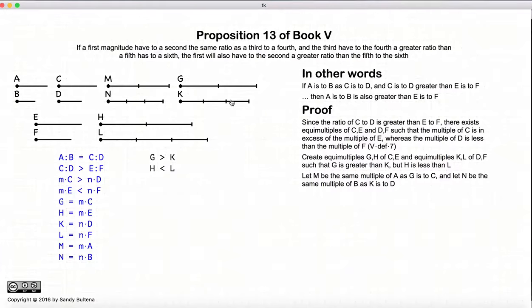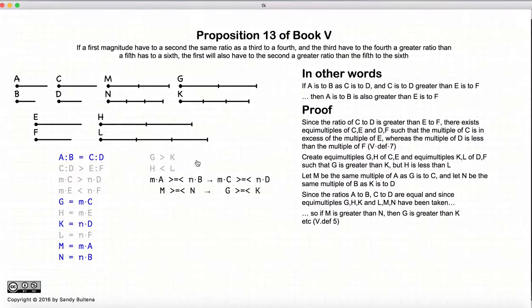Now, g is larger than k, and h is less than l. Well, a to b is equal to c to d. So by definition, if we have any two integers, if m times a is greater than n times b, then m times c would also be greater than n times d.